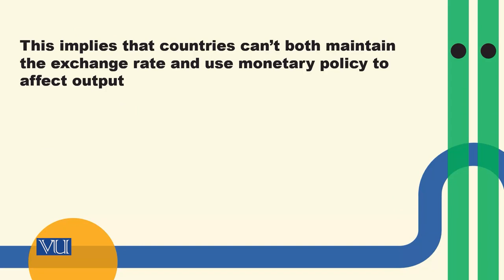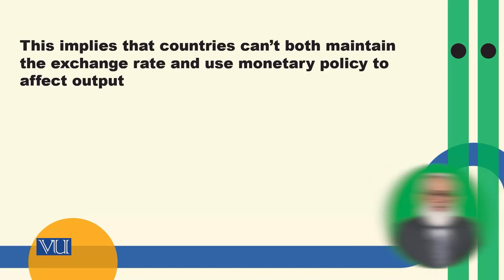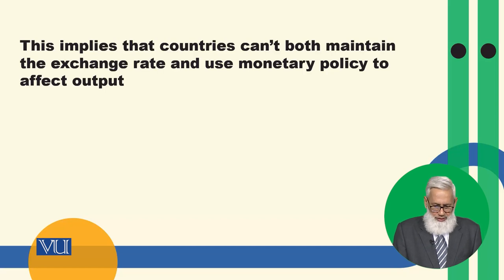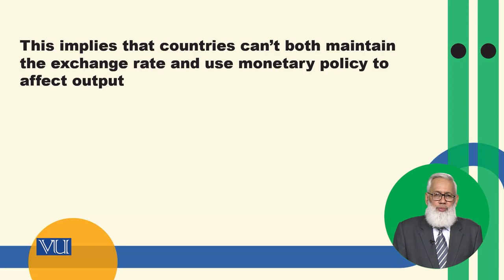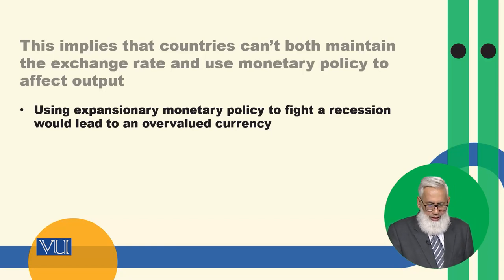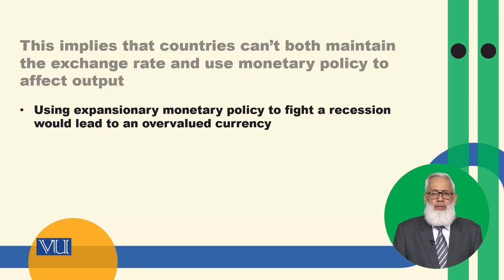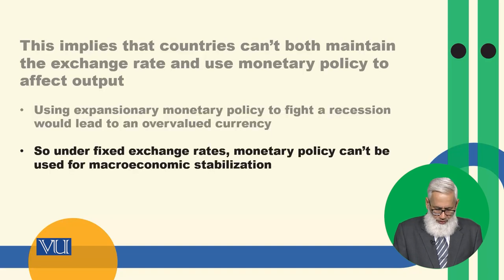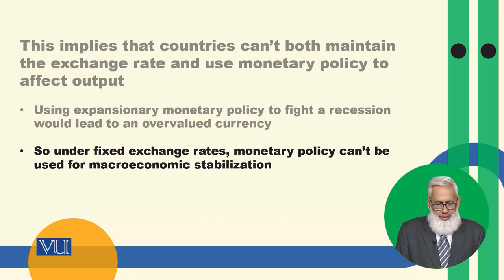This implies that countries cannot both maintain a fixed exchange rate and use monetary policy to affect output. Under a fixed exchange rate, no country can use monetary policy to affect its output. For example, if there is a recession and the country wants to increase money supply to overcome it, it cannot be done — using expansionary monetary policy to fight a recession would lead to an overvalued currency, draining official reserves. Therefore, under fixed exchange rates, monetary policy cannot be used for macroeconomic stabilization.